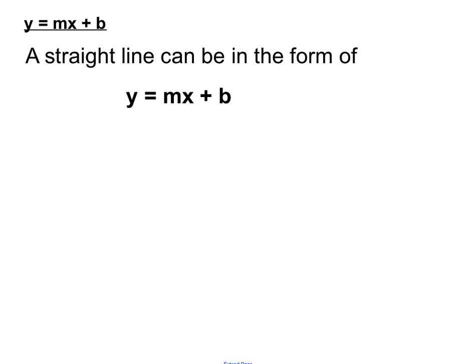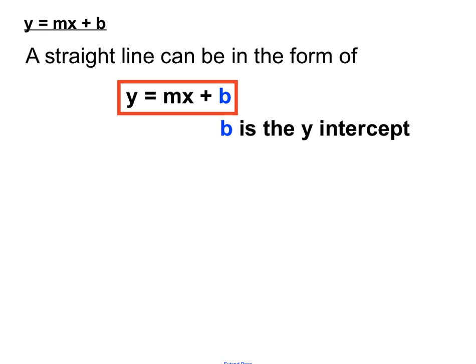When a line is in this format, we can learn a lot about the nature of the line — how steep it is, where it crosses the y-axis, and things like that. So b is the y-intercept; the number tacked on the end will indicate where the line crosses the y-axis.